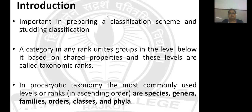Taxonomic rank is important in preparing a classification system and studying classification of microorganisms. A category in any rank unites groups in the level below it based on shared property, and these levels are called taxonomic ranks. If you group microorganisms on the basis of their genotypic and phenotypic similarity, that basic group is placed in a hierarchy and each level is called a taxonomic rank.